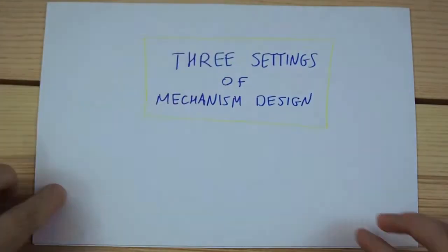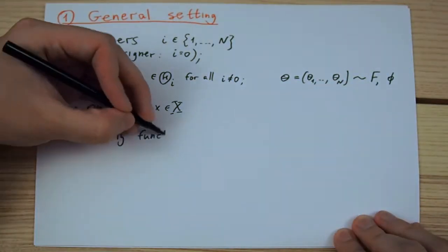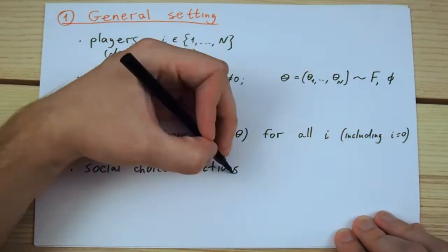There are three main settings that we will use to define the scope of our mechanism design problem. The first is General setting, which imposes only the very minimal structure on the environment. This setting consists of the following elements.